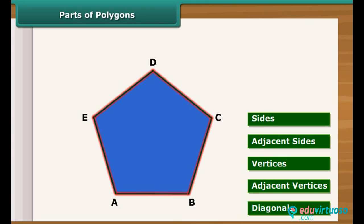For example, AB and BC, BC and CD, CD and DE, DE and EA are adjacent sides.